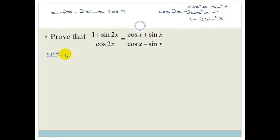Left hand side, which is 1 plus sin 2x over cos 2x. So I'm immediately going to replace this for the sin 2x. It becomes 1 plus 2 sin x cos x all over cos 2x.